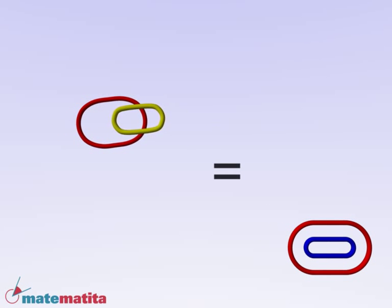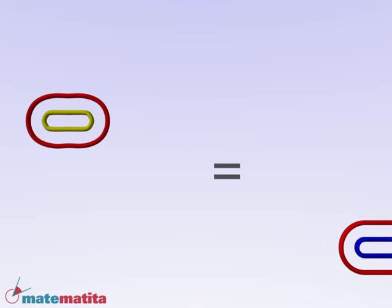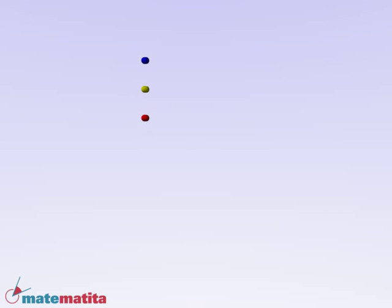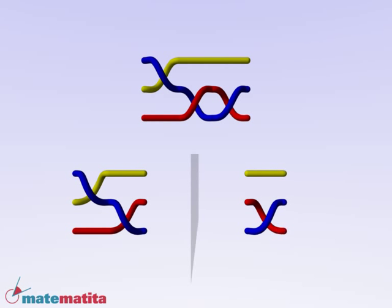So the question now is, given two arbitrary braids, do they give the same knot once they are closed? We introduce a new operation called conjugation. Choose a braid. Take another one and its inverse and compose them in this manner.